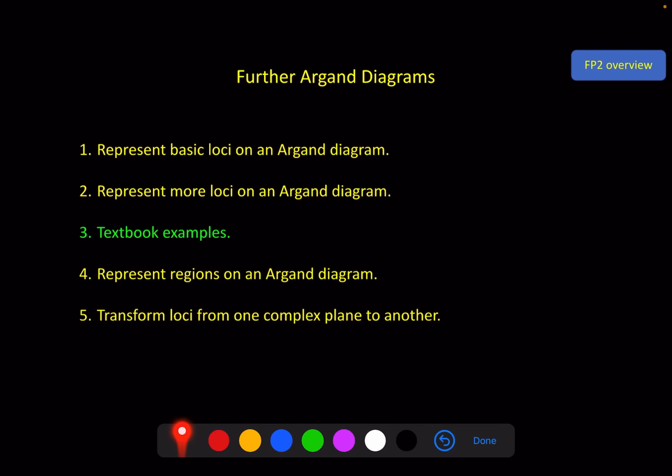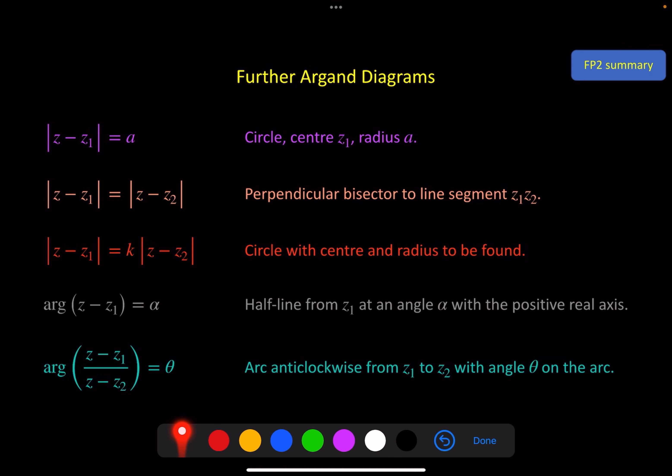Hello and welcome to the third video of the FP2 chapter Further Argand Diagrams. In this video I'm going to go through the remaining examples in the textbook for these two sections. There are quite a few, so I put them all in this video together, and all of these examples are to do with these five standard results that we've looked at for loci on an Argand diagram. Keep all of these in your mind, because these are the very things that we are practicing here.